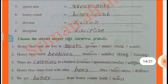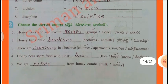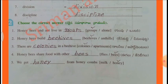Choose the correct answer: Honeybees and Ants live in large groups. Honeybees build honeycombs. There are colonies in a beehive. Honeybees share food with other bees. We get honey from honeycombs.